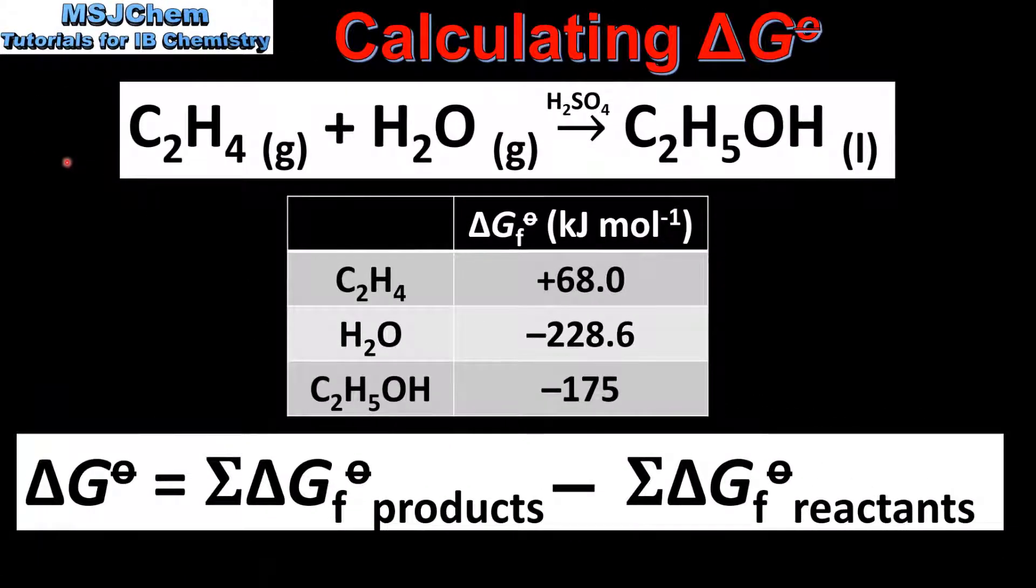So next we look at an example. In this reaction ethene reacts with steam to form ethanol. In this table we have the standard Gibbs free energy of formation values of the reactants and products. And here we have the equation that we'll use to calculate the standard Gibbs free energy change.